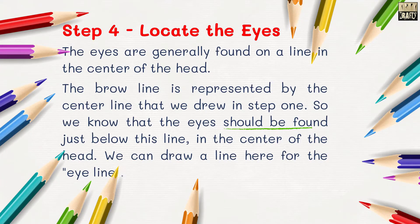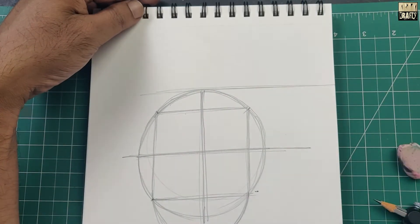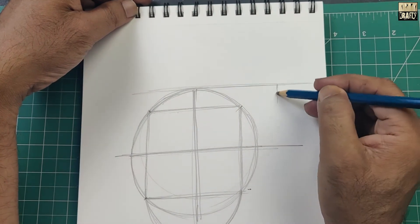Step 4. The eyes are generally found on a line in the center of the head.